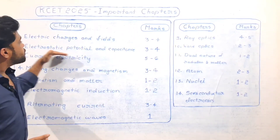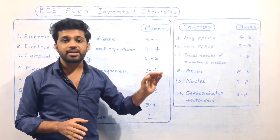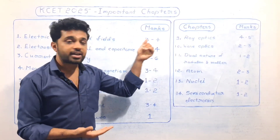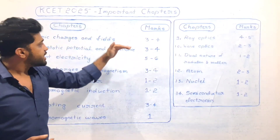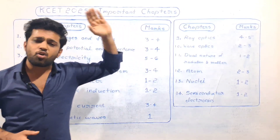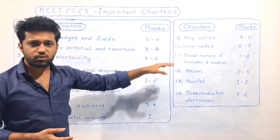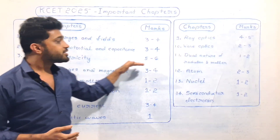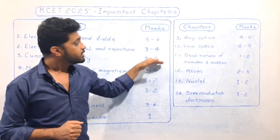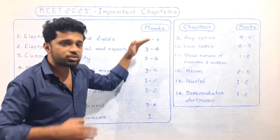So let's look at this chapter-wise plan. KCET has 3 to 4 marks from this chapter, so you will cover it in November. The chapters to cover are: Electric Charges and Fields, Electrostatic Potential and Capacitance, and Current Electricity — you will cover them in November. Current Electricity is also 5 to 6 marks and is a very important chapter.